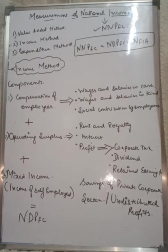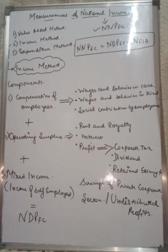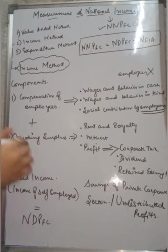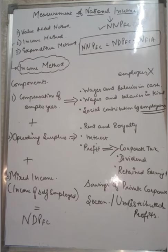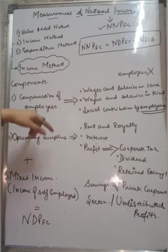Employees get wages and salaries in return for their work, both in cash and in kind. Wages refer to payments made to low-scale workers on a daily basis, while salaries are paid to high permanent employees. Cash means money paid directly; kind means non-monetary benefits such as free medical services or free medical check-ups. These in-kind benefits are also taken into account.